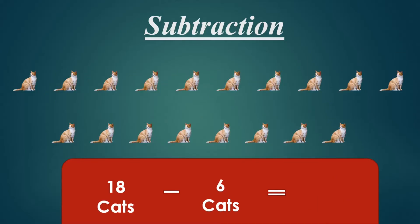This is our last example with cats: 18 cats minus 6 cats. That means out of 18 cats we have to minus 6 cats. Now 1, 2, 3, 4, 5, 6. We have to minus 6 cats.